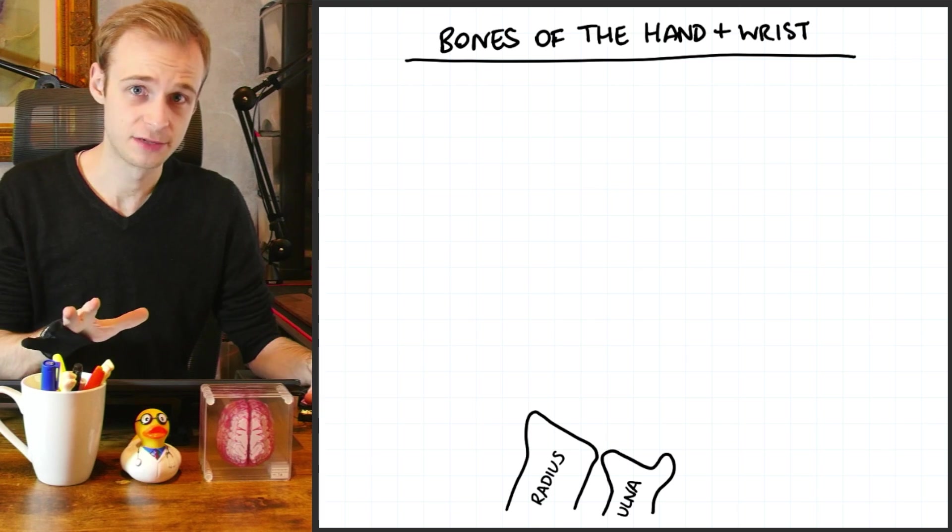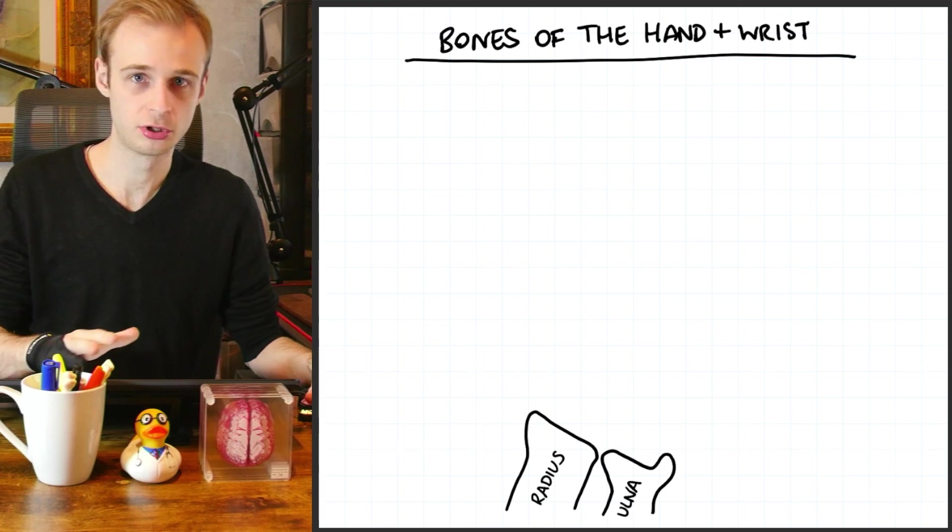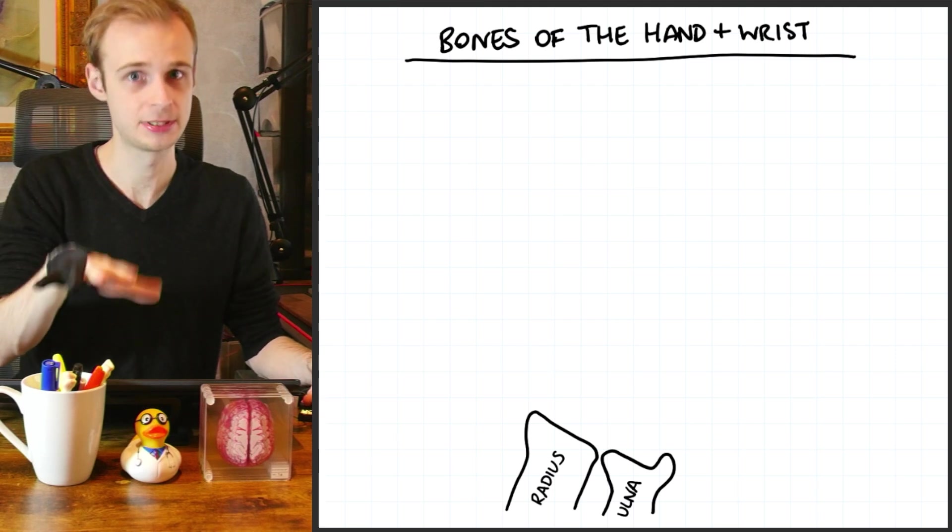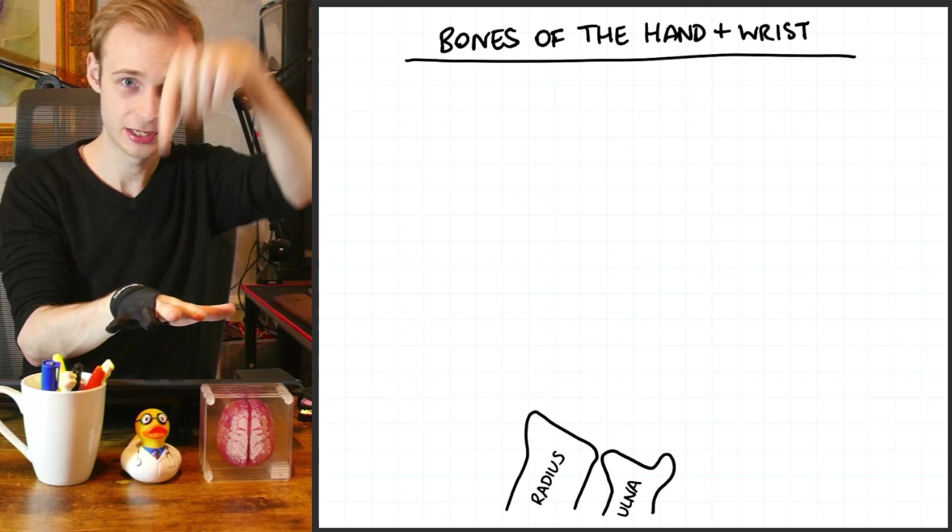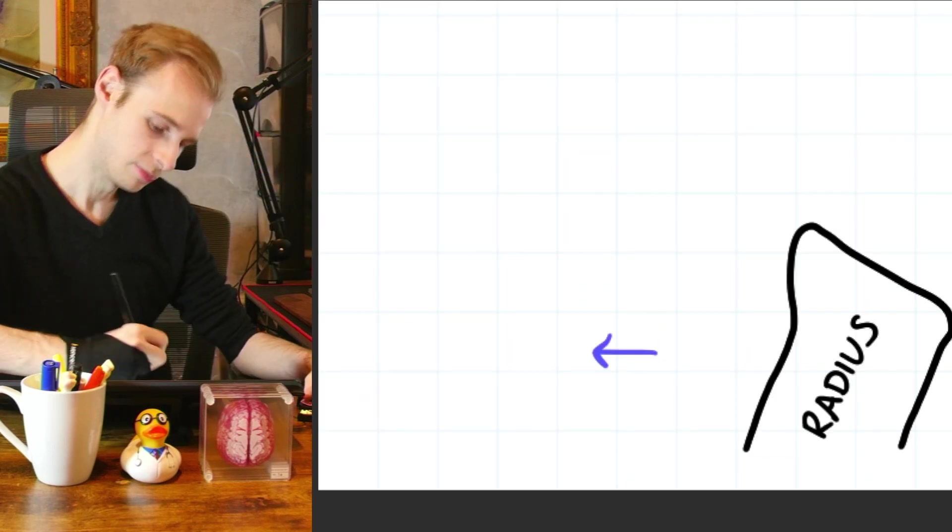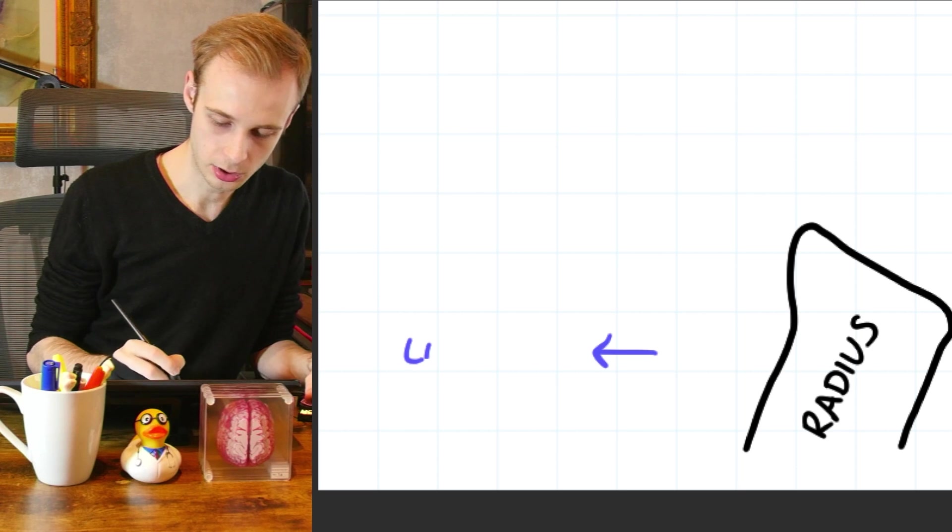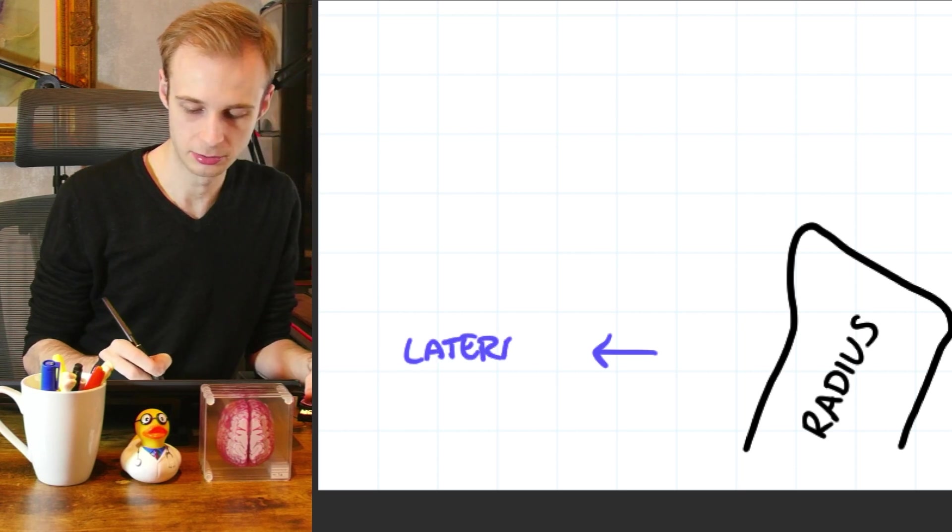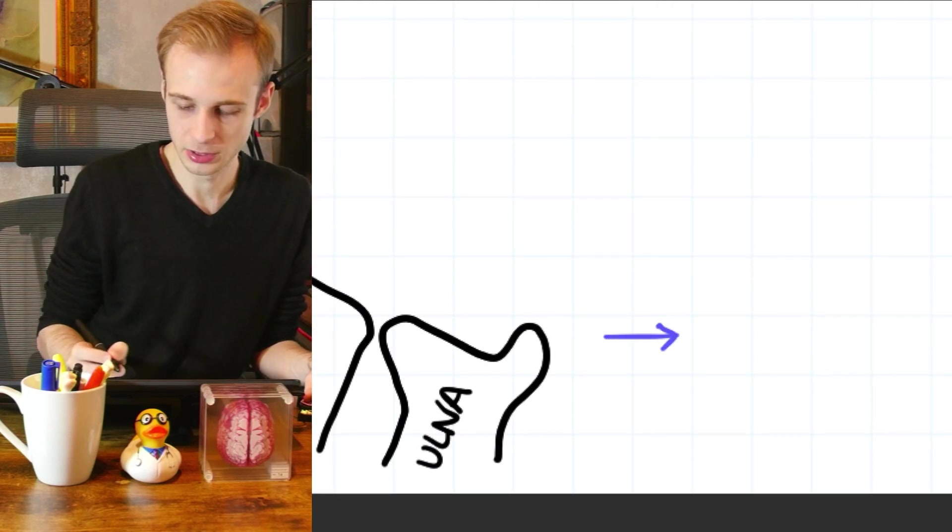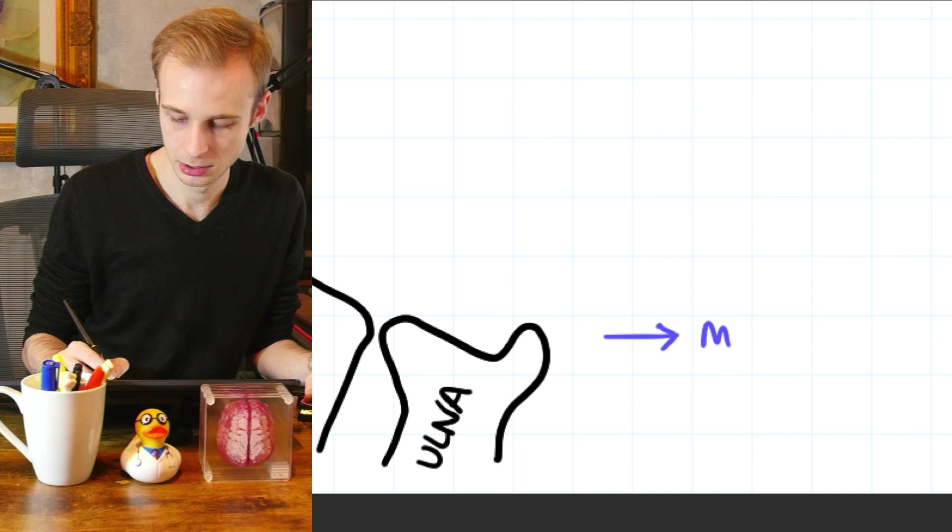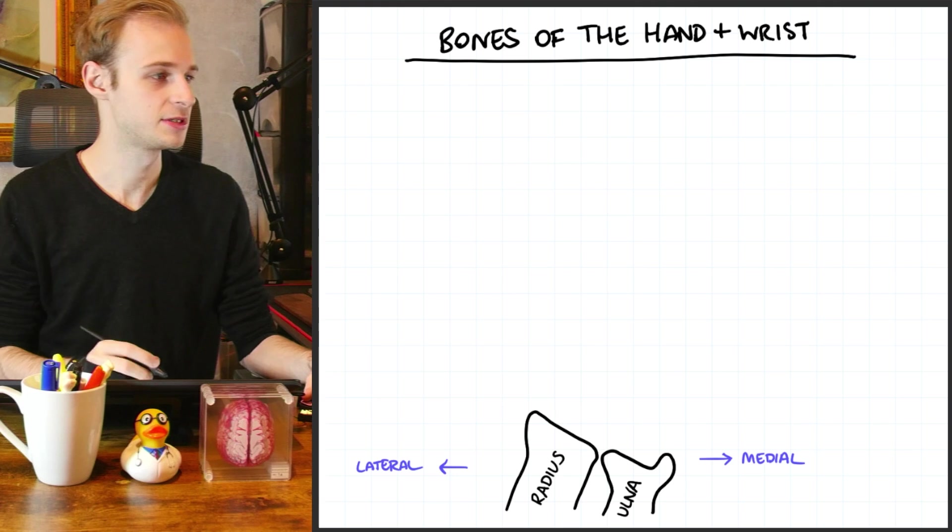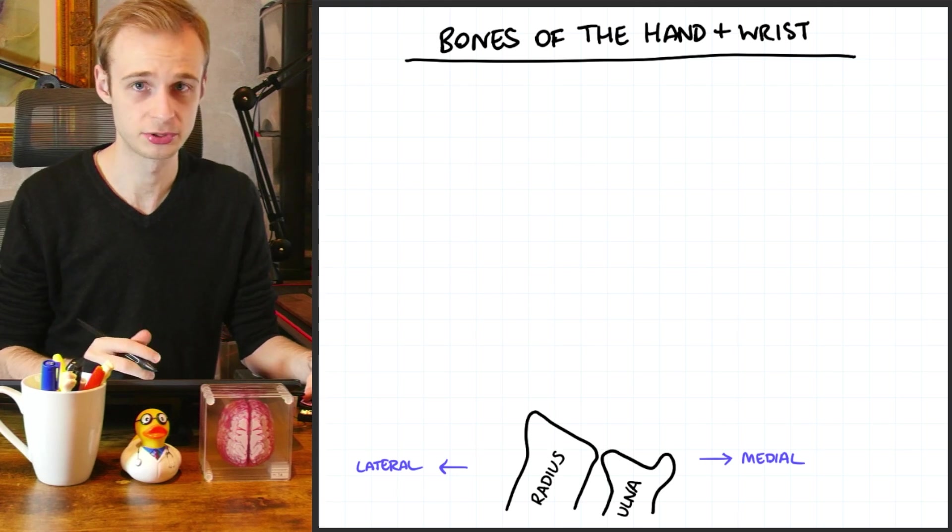Now just to get our perspective clear before we move on, what we're about to draw is a right hand looking from the top down what we call a pronated position. So this is my right hand we are drawing as if we were looking down at the top. It's probably good practice here to draw on our anatomical axes if you like. So on the right side of the image we have the medial side of the hand and on the left side of our image here we have the lateral side.